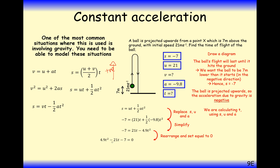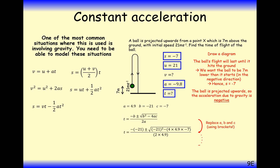You can plug the quadratic into your calculator using the quadratic solver mode or use the formula. We get two answers: 4.6 or minus 0.3. The minus 0.3 refers to going back in time, which we don't want — so we take the positive answer. The time of flight is 4.6 seconds to two significant figures.